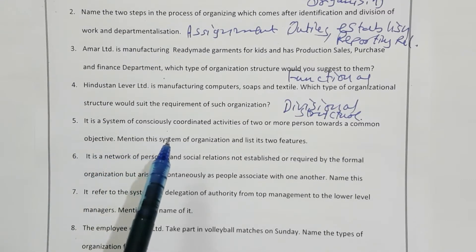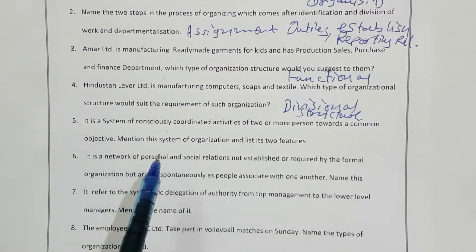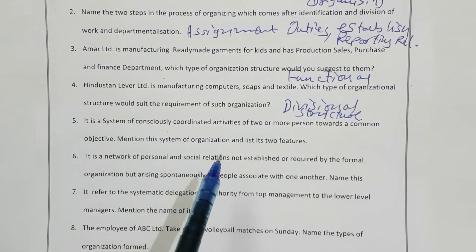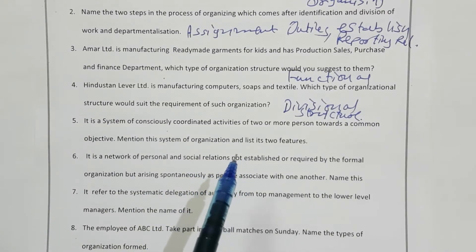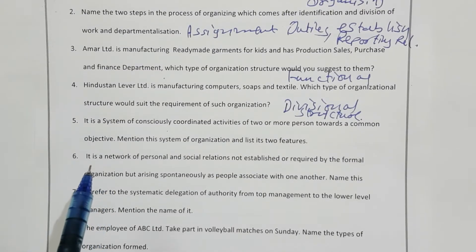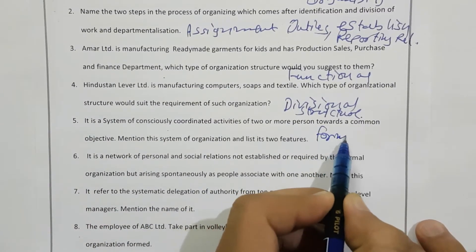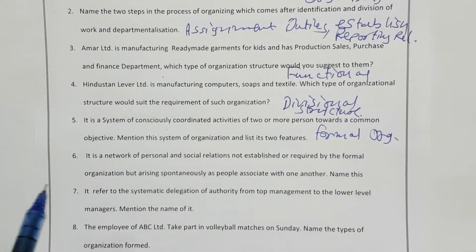It is a system of consciously coordinated activity for two or more persons towards a common objective. Mention this system of organization and list its two features. Here the keyword is 'system of conscious coordination' — it is none other than formal organization. You can write any two features, like: it is deliberately formed by top management, and it emphasizes more on work.